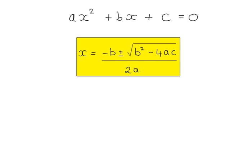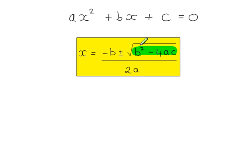Now the number of solutions that you get to an equation like this depends on the value b squared minus 4ac. If b squared minus 4ac — this value inside the square root — is negative, clearly you cannot work out the square root of a negative number. In that case there will be no solutions.